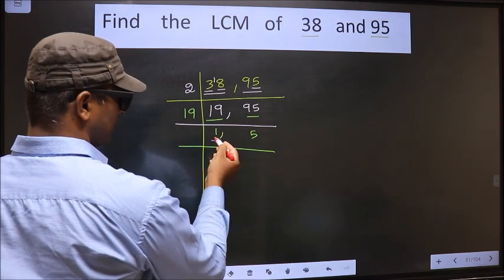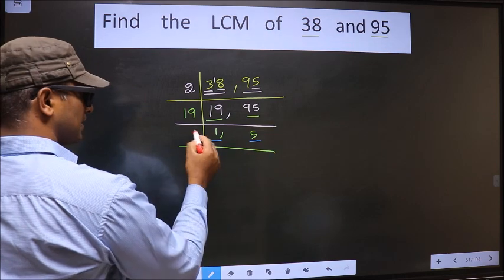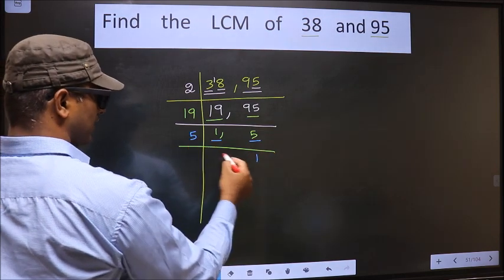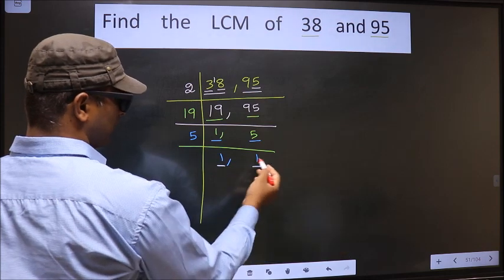We got 1 here, so focus on the other number, that is 5. 5 is a prime number, so 5 1s 5. We got 1 in both the places.